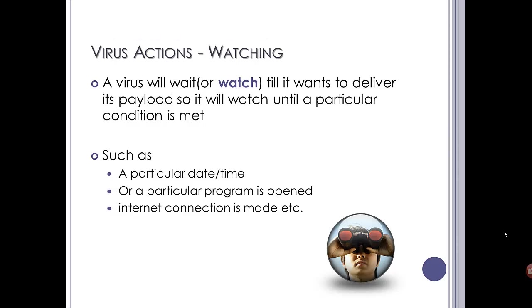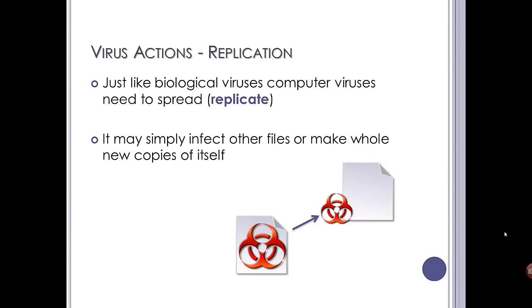Viruses will usually watch until a particular event happens. This might be a particular program opening, it might be hardcoded to trigger on a particular date or day, or it might wait for an internet connection to be made so it knows it can spread itself. Whilst doing that, or after, it may start to replicate — infecting other files or making whole new copies of itself. It may overwrite the contents of a legitimate Word document or Excel sheet, or clone itself and try to mask itself as Windows system files.